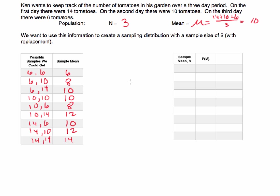Now with this information I can create a sampling distribution. I've listed all the possible samples and all the possible sample means. I can now talk about the probability of taking a sample and getting a particular sample mean. Let m be a random variable representing the sample mean. The possible values are: six, eight, ten, twelve, and fourteen.